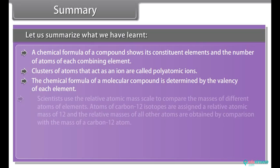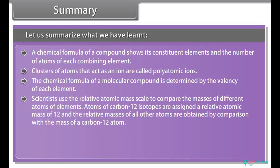Scientists use the relative atomic mass scale to compare the masses of different atoms of elements. Atoms of carbon-12 isotopes are assigned a relative atomic mass of 12, and the relative masses of all other atoms are obtained by comparison with the mass of a carbon-12 atom.